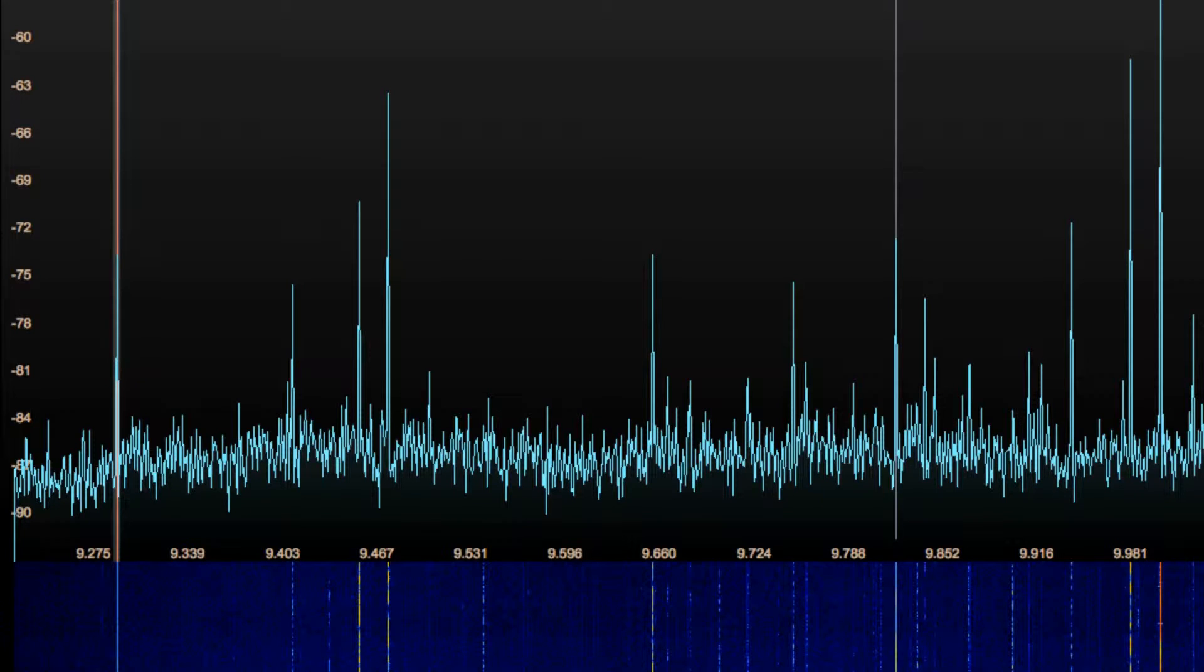On the other end, we get reception into the shortwave and ham radio bands to at least 10 MHz or so, depending on the exact size of the antenna. Here we see the 30 meter shortwave band from 9.4 to 10.0 MHz.